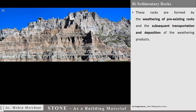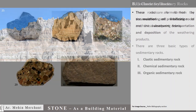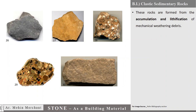Sedimentary rocks are formed by the weathering of pre-existing rocks and the subsequent transportation and deposition of the weathering products. There are three basic types of sedimentary rocks: Clastic sedimentary rock, Chemical sedimentary rock, and Organic sedimentary rock. Clastic sedimentary rocks are formed from the accumulation and lithification of mechanical weathering debris.